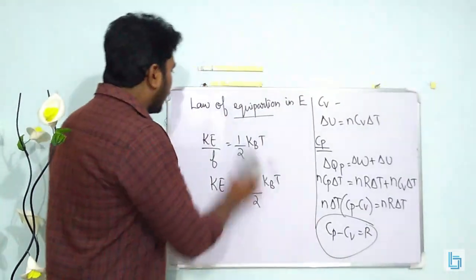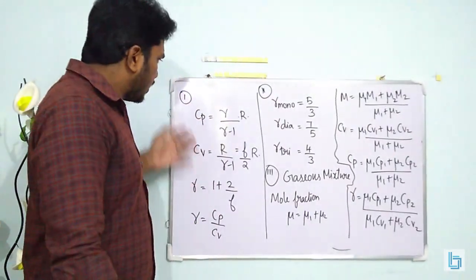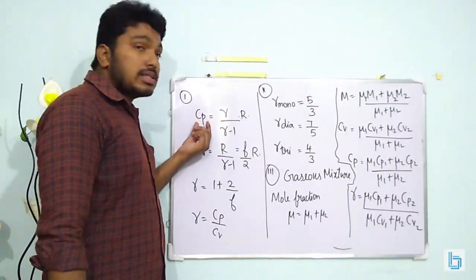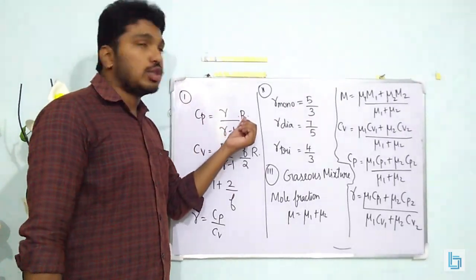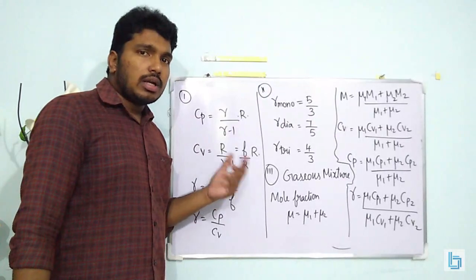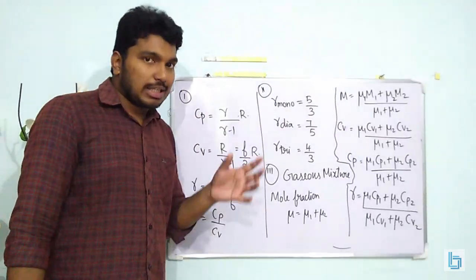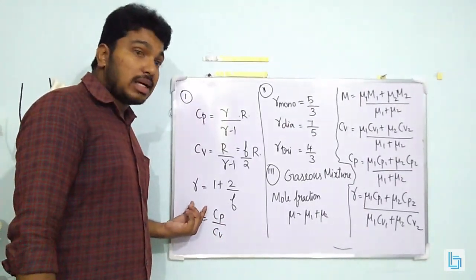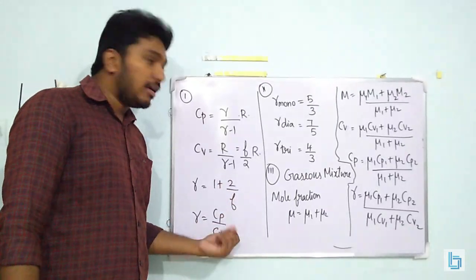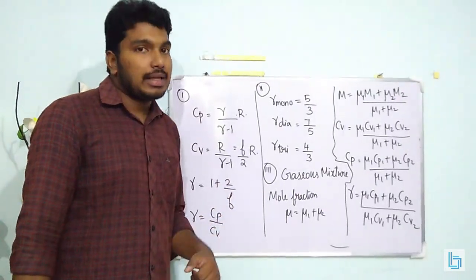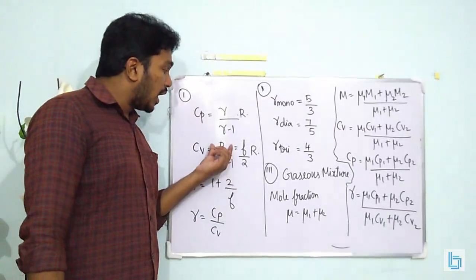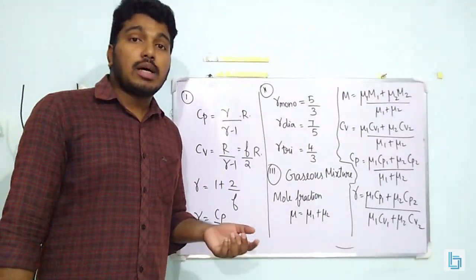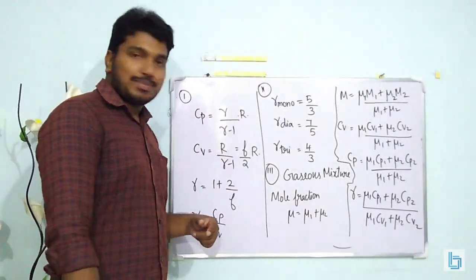Additional important conditions: Cp = [γ/(γ−1)] × R, where γ = Cp/Cv is the adiabatic constant. Also γ = 1 + 2/f, Cv = R/(γ−1) = (f/2)R, and Cp = (f/2 + 1)R. Remember the gamma values for monoatomic, diatomic, and triatomic gases — use these if not given in the question.